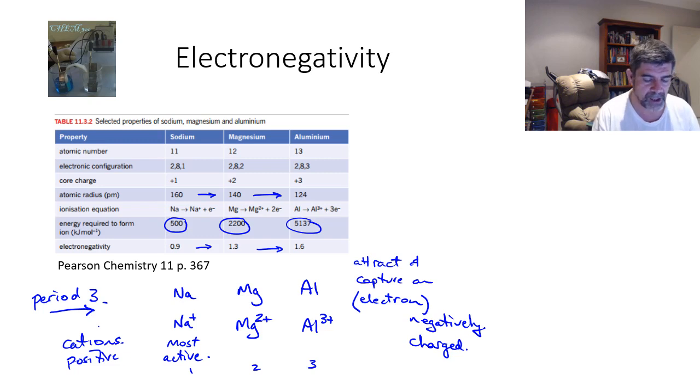Electronegativity is a good measure of the ionic nature of different bonds. The difference tells us whether substances are bonded covalently or ionically. The very low values for most of these metals indicate that they are more likely to form ionic compounds when combined with non-metals, which have much higher electronegativity values.